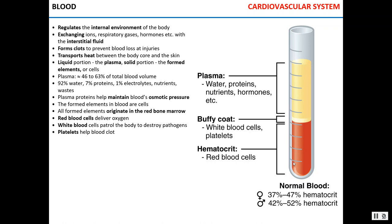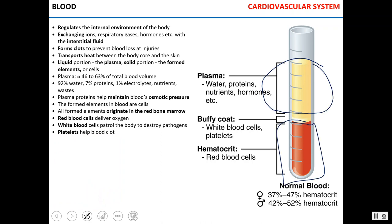Now let's talk about blood. Blood regulates the internal environment and provides the transport medium for exchanging ions, respiratory gases, hormones, and nutrients with the interstitial fluid. It also prevents bleeding by forming clots and transports heat. Blood consists of plasma and formed elements, which are cells. Plasma makes up about half the blood volume. The three types of formed elements are white blood cells, platelets, and red blood cells. Plasma maintains osmotic pressure, and all blood cells originate in the bone marrow.